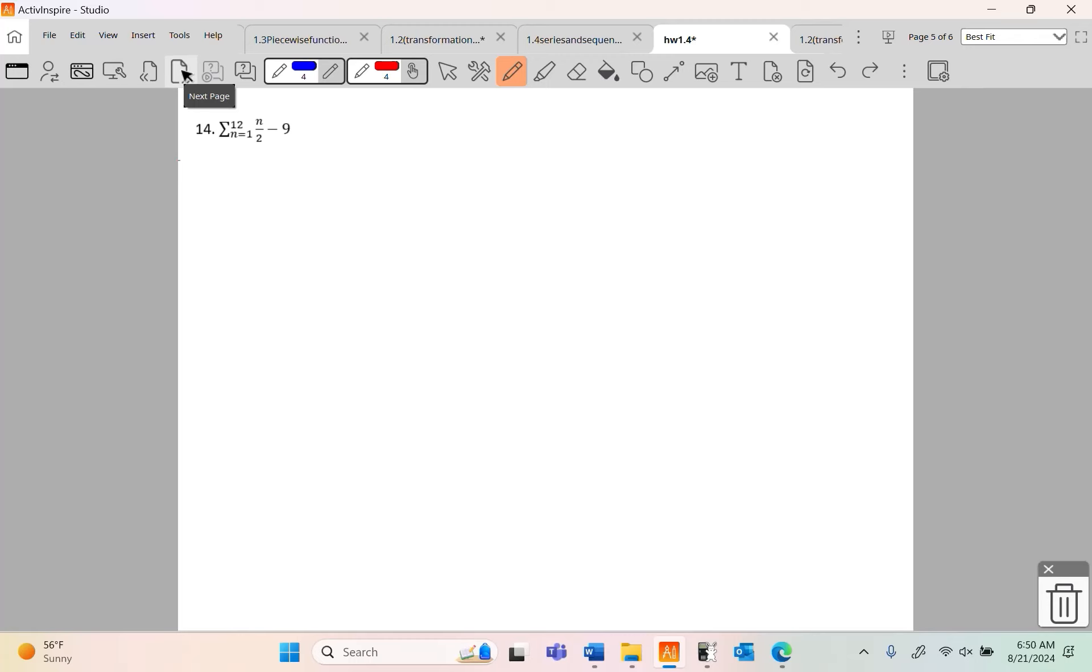Now I use this as sigma notation. I notice that this n over 2 minus 9 looks conspicuously like mx plus b. Maybe you could think of it as 1 half n minus 9. And the deal is, if I look like mx plus b, I am arithmetic. This is just a line. You're always adding the same thing. But because it's arithmetic, I get to use the summation formula for arithmetic. S of n things is n over 2 times a sub 1 plus a sub n.